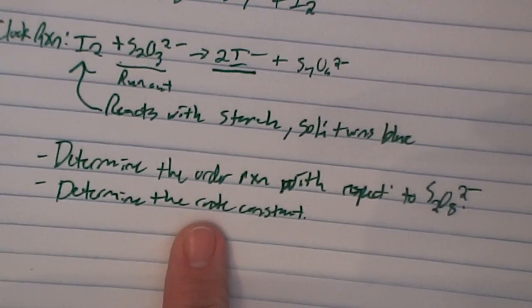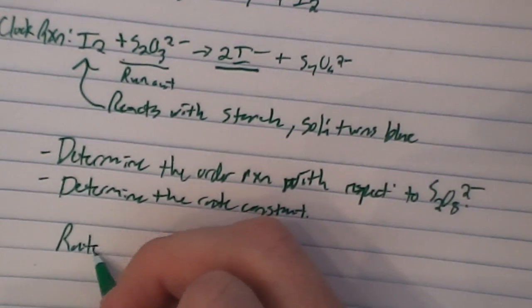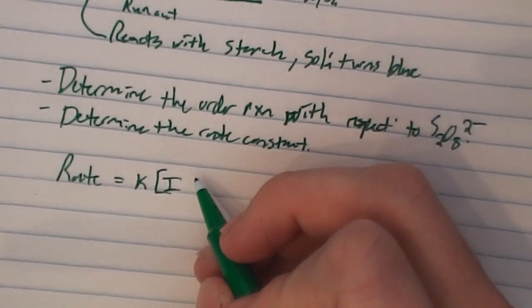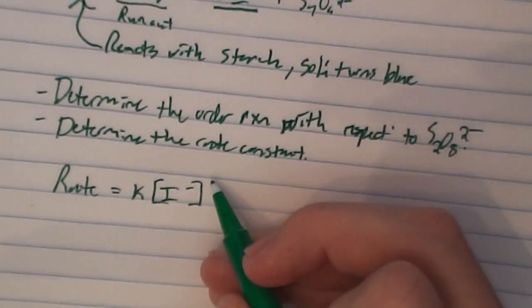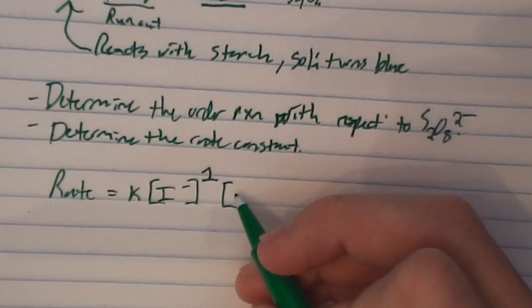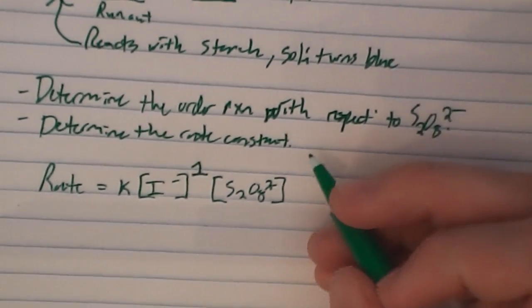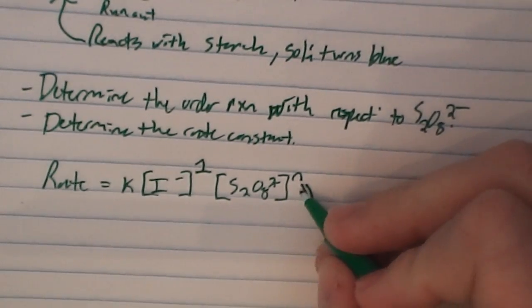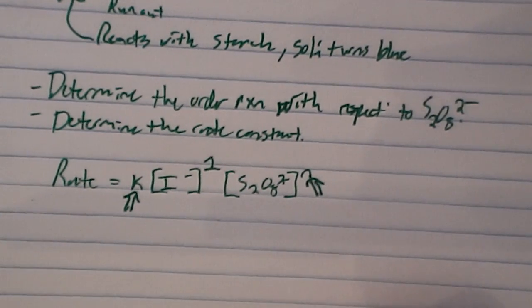We can write a rate law for this: rate = k × [I⁻]¹ × [S₂O₈²⁻]ⁿ. I'm going to go ahead and give you the order of reaction with respect to iodide, which is 1. You are going to be determining n — the order with respect to persulfate — and k, the rate constant, from this process.